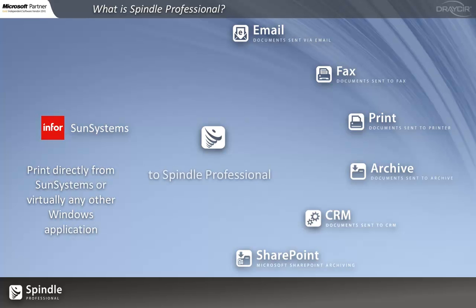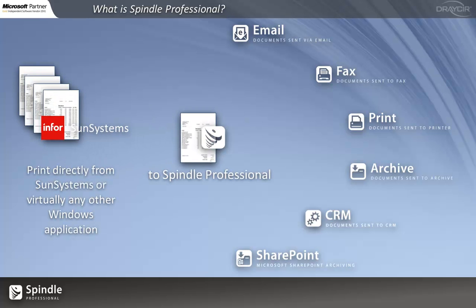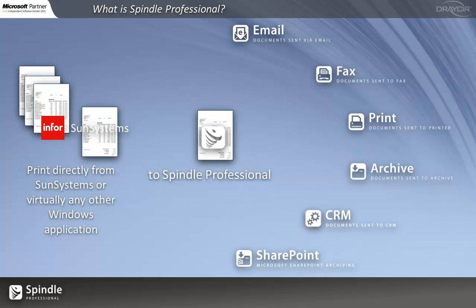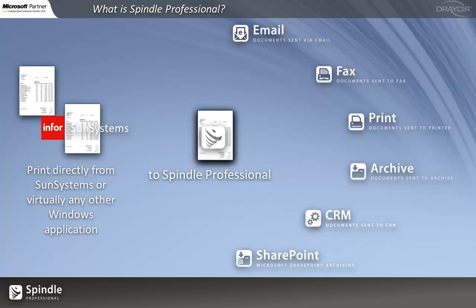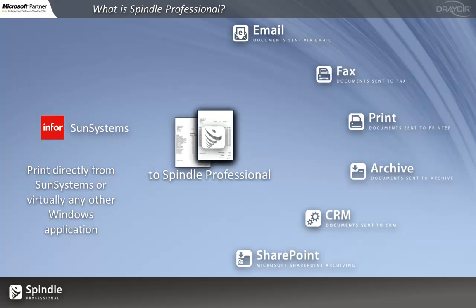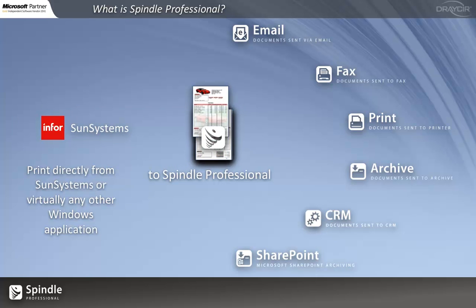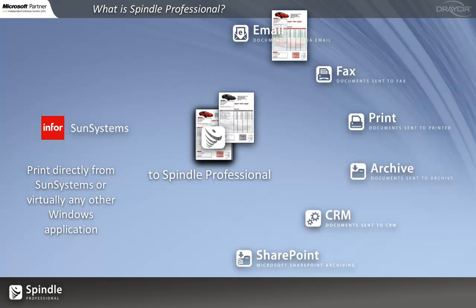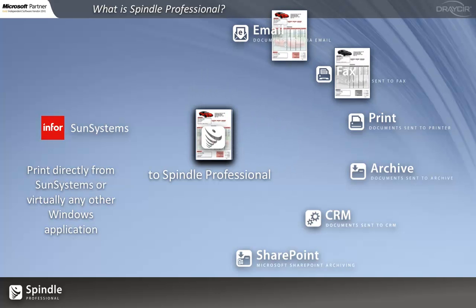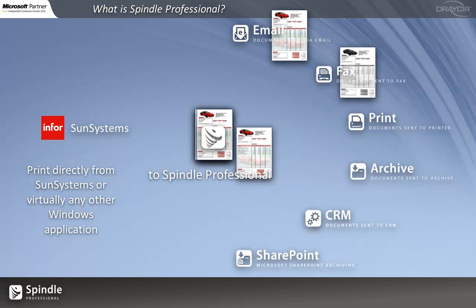Spindle is based around an intelligent Windows printer driver which can take your document or batch of documents from Sun Systems, or virtually any other Windows application that can print, and then based on your configurations can gather the documents together, turn them into PDFs, and then automatically deliver them to the right person in the right style in the right way.